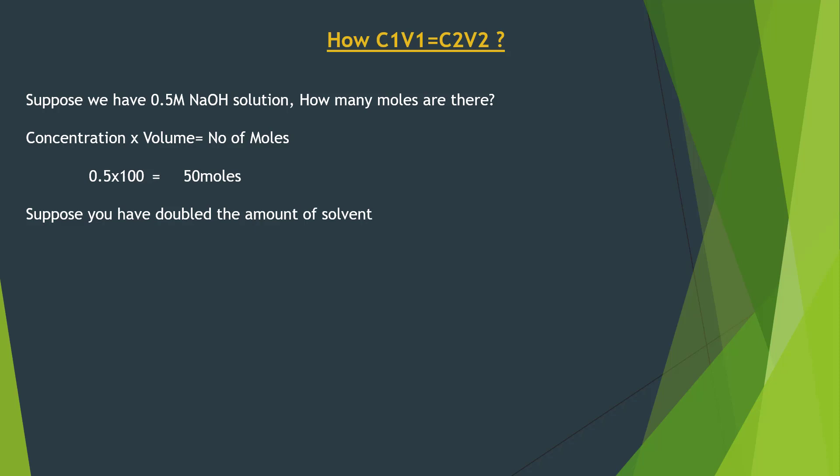Since you have doubled the amount of solvent, the concentration would get halved and this would come out to be 0.25 as you have doubled the solvent. So, 200 multiplied with 0.25, this would give you 50 moles. That's why we can write C1V1 is equal to C2V2.